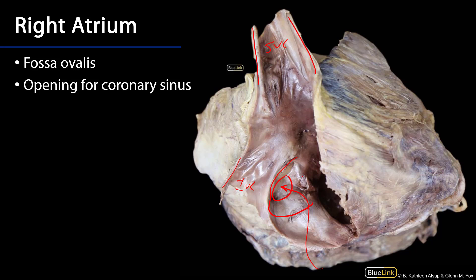We can also see a little flap here, reflected away ever so slightly, and just beyond that is the opening for the coronary sinus, or the coronary sinus os. A little superior to that along this ridge would be the region where the AV node will live — the atrioventricular node — kind of where the interatrial septum meets the atrioventricular septum.